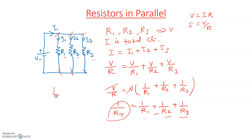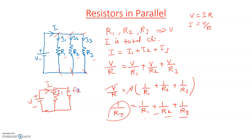The same formula applies if two resistors R1 and R2 are connected in parallel — we use the same reciprocal method to find the equivalent resistance, and the total current I equals I1 plus I2.